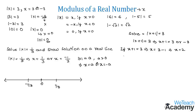Now consider x plus one equals minus three. Then x equals minus three minus one, which gives x equals minus four.